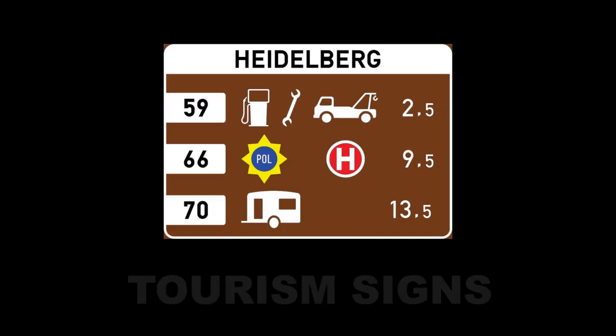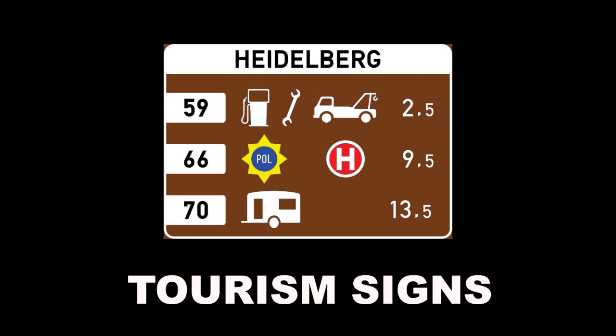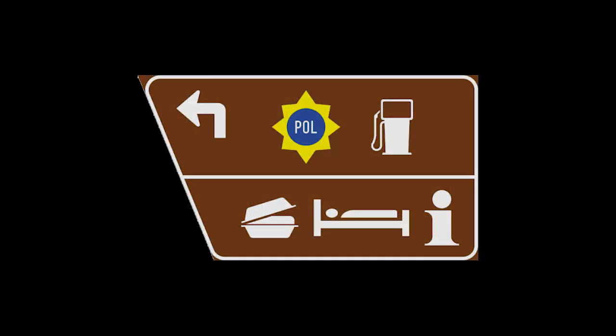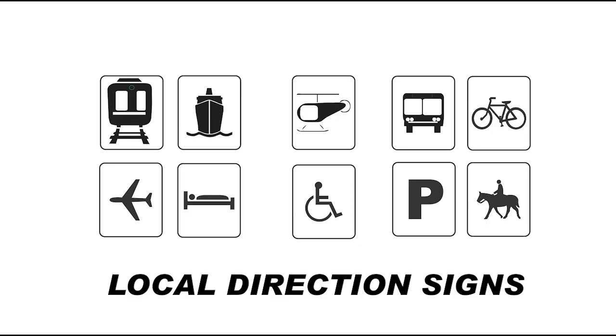Tourism signs have a brown background and indicate different tourist areas, as well as the distance and when to turn off to a specific area. Local direction signs have a white background and inform you of different local places such as markets and local places of interest.